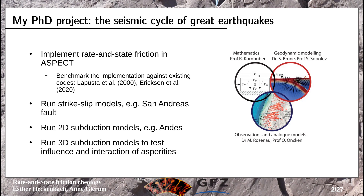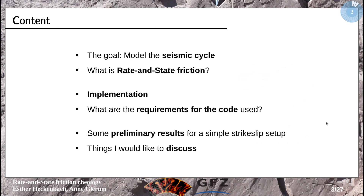Today I want to first present what the seismic cycle is, then what rate and state friction is, then how I implement that in ASPECT, and also the other requirements for a code that wants to run seismic cycle models. In the end I'll show some preliminary results for a simple strike-slip setup, and I also have a slide with things I'd like to discuss later today.